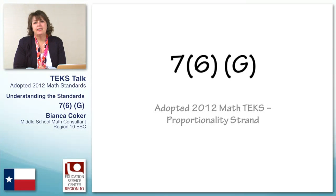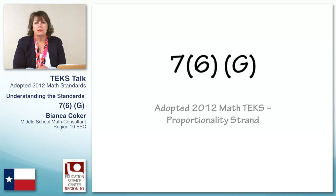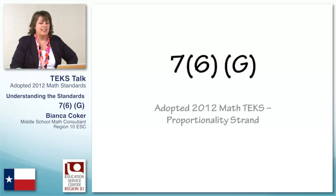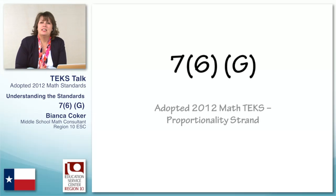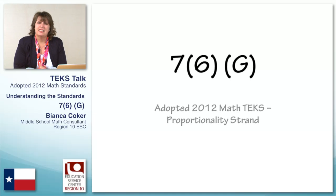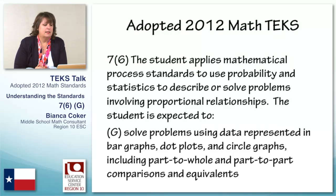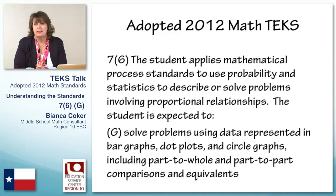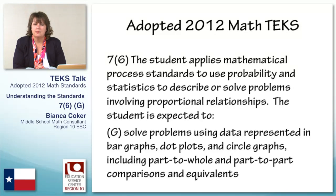Hi, I'm Bianca Coker, and today I'm going to share some insights with you about some of the new standards, specifically 7.6. This standard is interesting that it's in the probability and proportionality strand, because it's about statistics. So let's take a look. The 7.6 standard says the student applies mathematical process standards to use probability and statistics to describe or solve problems involving proportional relationships.